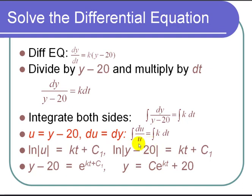The integral of du over u, that's just the natural log of the absolute value of u. The integral of k is k times t plus some constant. I'll call it c1.